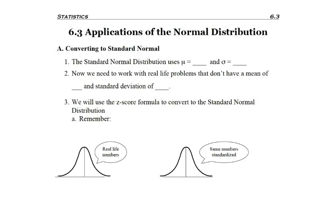Okay, now for section 6.3 we're going to talk about applications of the normal distribution. The way that we're going to solve any problem that satisfies a normal distribution is to convert the information to a standard normal. If you remember, the standard normal uses an average that equals zero and a standard deviation that equals one, so μ is zero and σ is one.